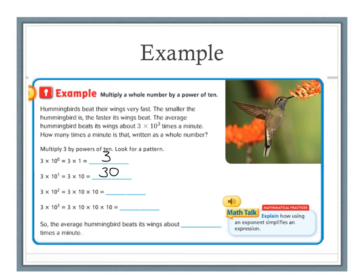3 times 10 to the 2nd power is like 3 times 10 times 10. I like to think of that as 3 times 100. So the value would be 300.